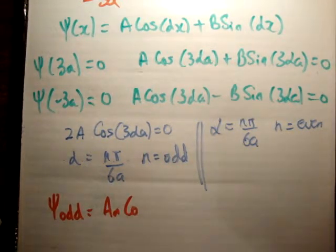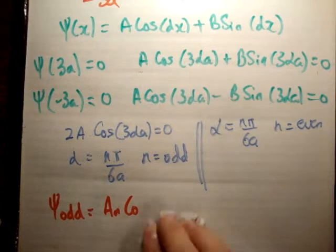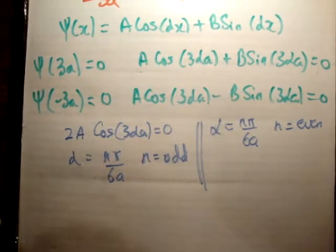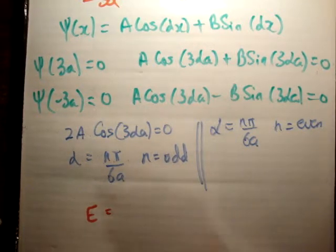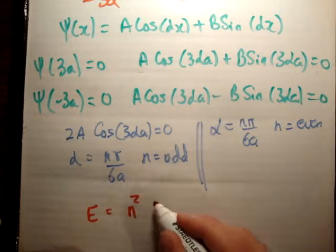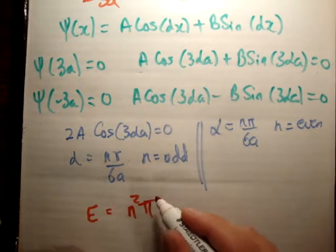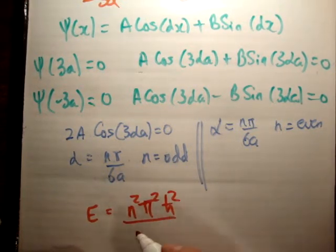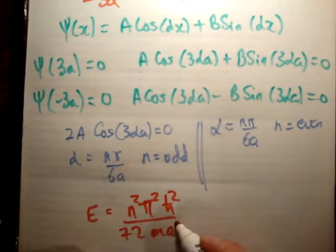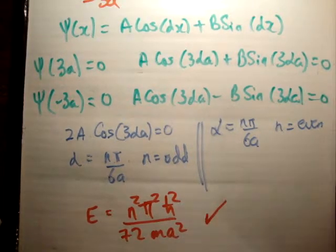The cosine solutions are the even solutions and sine solutions are the odd solutions. When I work out the energy, because λ equals √(2mE)/ℏ, we find the energy is n²π²ℏ² over 72ma²—the exact same energy values we got for the well centered at 3a with a width of 6a.